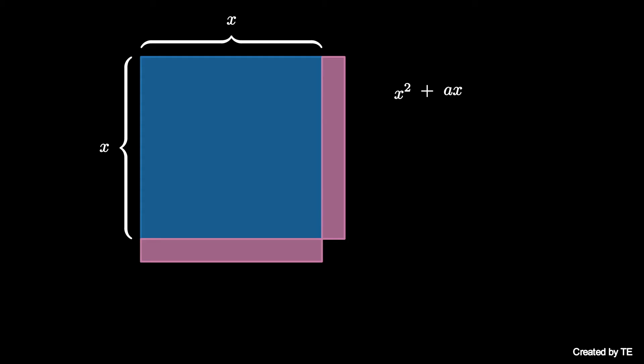These three rectangles now almost fill a larger square with side length x plus a over 2. However, there is a smaller a over 2 by a over 2 square missing from the lower right corner.